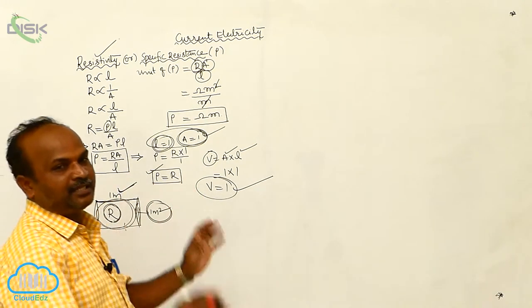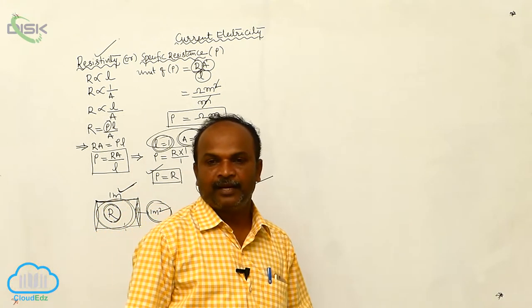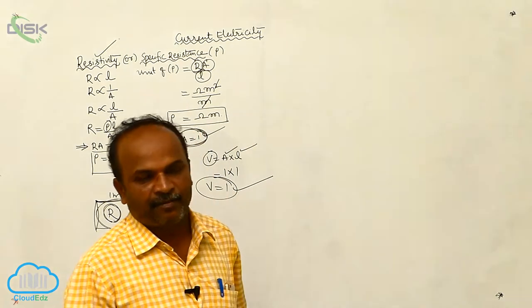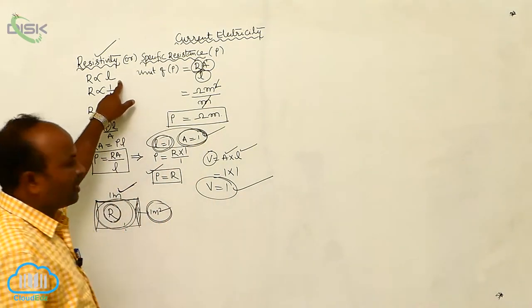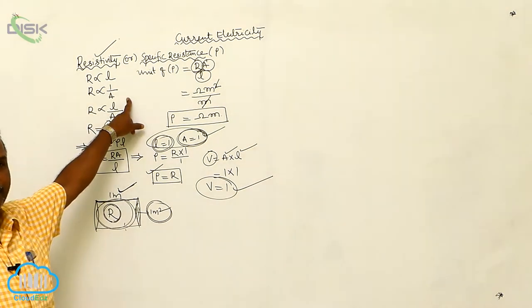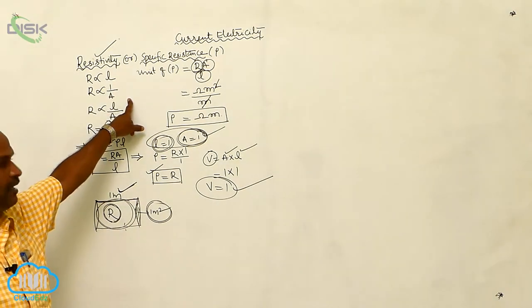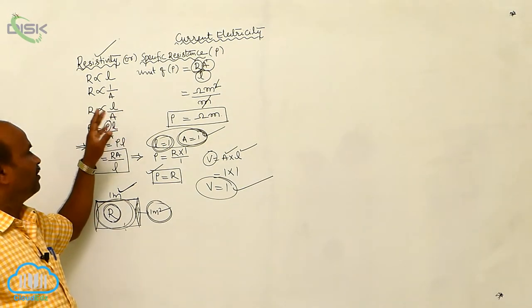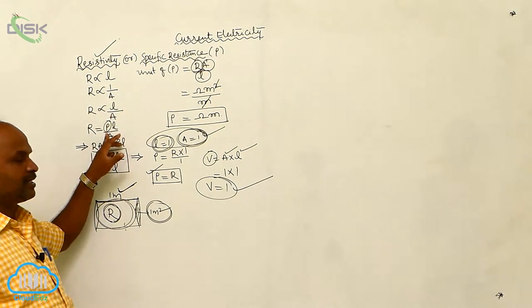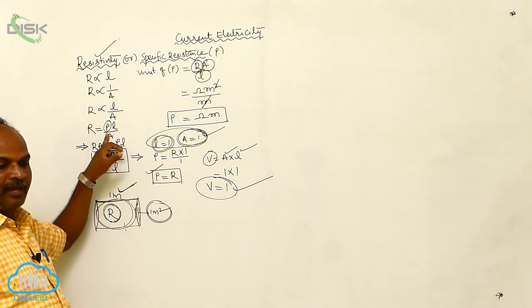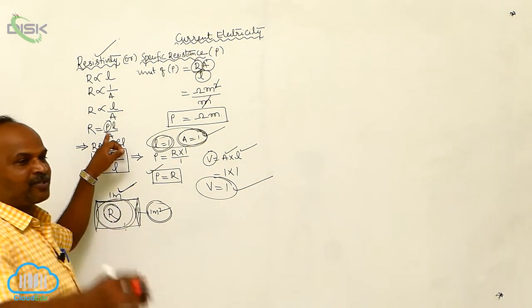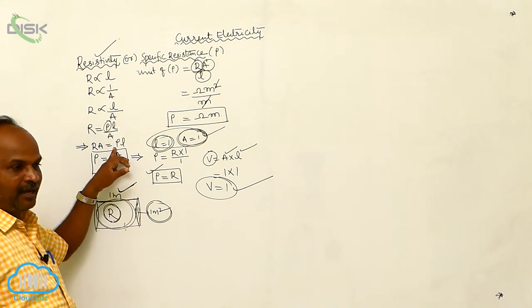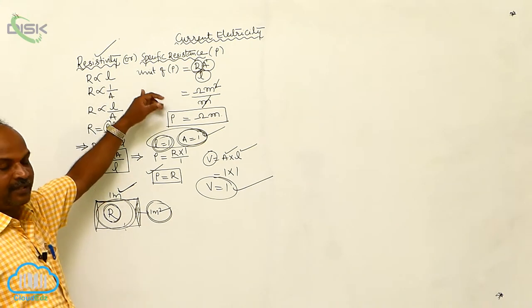So, what is resistivity? The resistance of a conductor is directly proportional to length, inversely proportional to cross-sectional area, and directly proportional to L by A. There is a proportionality constant rho, and this proportionality constant is called resistivity.